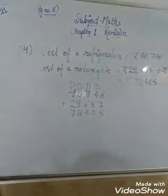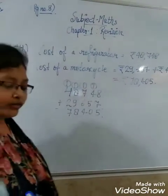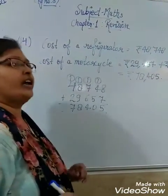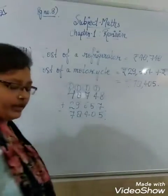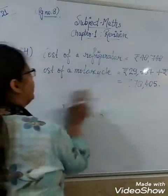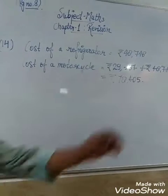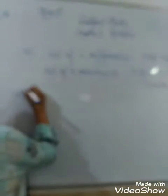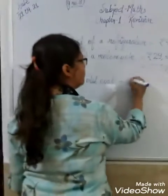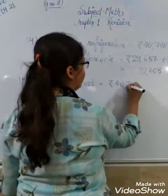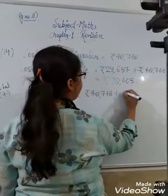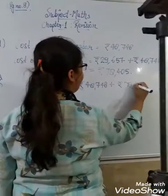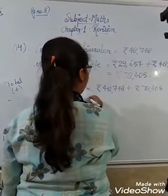Now what they are asking? They are asking what is the total cost of both refrigerator and motorcycle? Then for that what we will do? We will add them in total. If the word is giving total, then it is clear that we have to do addition. Rs. 48,748 plus Rs. 78,405. Now we will do addition.